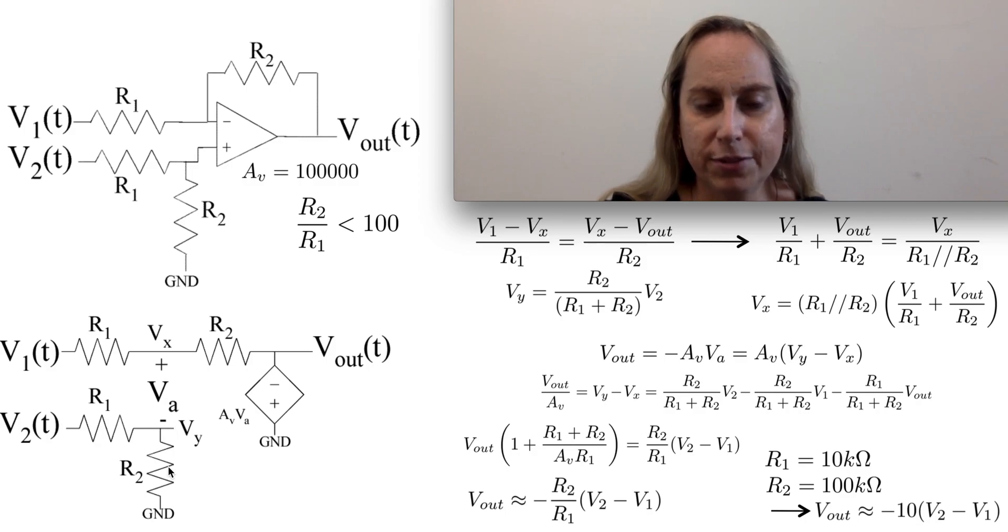Notice there is a resistive voltage divider. There's no current going in there, because a classical op-amp, there is no current. There's no current on the inputs. There's no current coming out of Vx. So I basically am going to have a voltage divider here, and then a KCL at Vx.